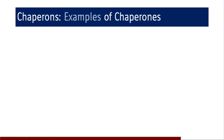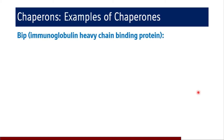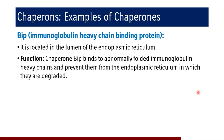Chaperones are found in various cellular compartments — the cytosol, mitochondria, and the lumen of the endoplasmic reticulum — where they ensure proteins are properly folded before release. An example is BIP, the immunoglobulin heavy chain binding protein, located in the lumen of the ER. BIP binds to abnormally folded immunoglobulin heavy chains and prevents their release from the ER, where they are subsequently degraded.